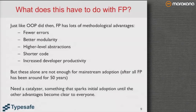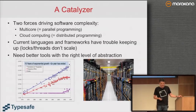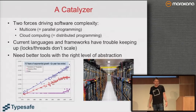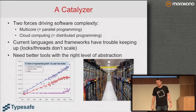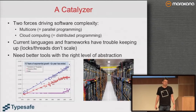Something that starts initial adoption beyond what we see now. The adoption we see is already super encouraging, but we need to reach out to other layers of programmers, and after that the other advantages become clear to everyone. I believe we have this catalyzer now — the two forces that drive a lot of software complexity today, which come from hardware: multi-core and cloud computing.